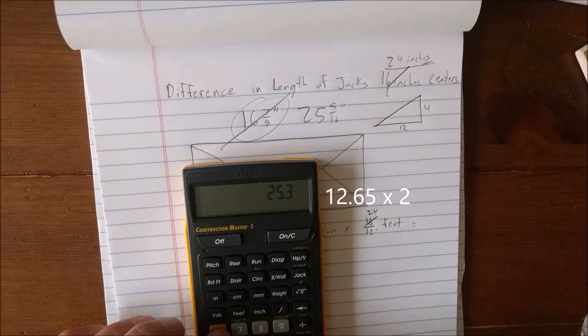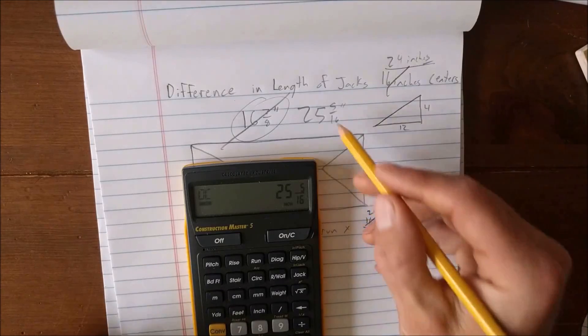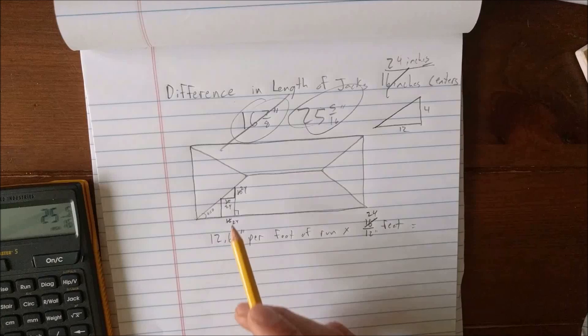25.3. I'm going to convert that to the nearest 16th of an inch. 25 and 5/16ths. So that's how you get the common difference in length between the hip jack rafters.